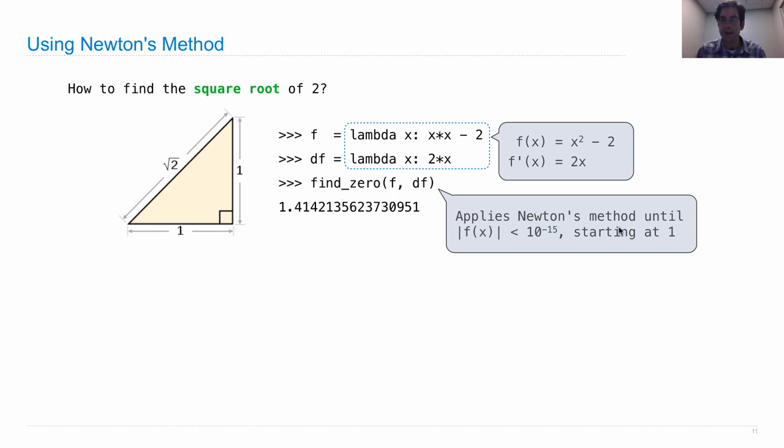We had to input f of x and f prime of x, its derivative, and then find_zero did all the heavy lifting. So it applied Newton's method until f of x was really close to 0, so absolute value of f of x is less than 10 to the negative 15, very small, starting at 1. So that's what the find_zero function does. I haven't defined it yet, but I'm going to.